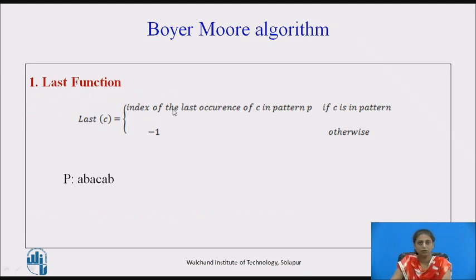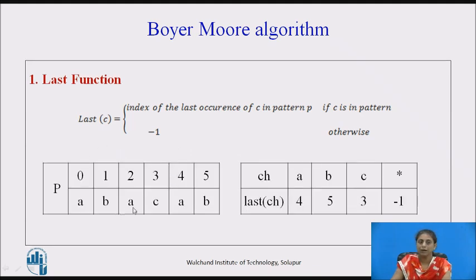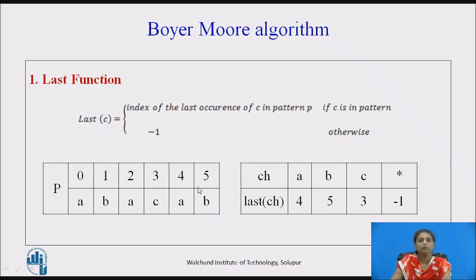The first step of the BM algorithm is to calculate the last occurrence of each character, called the last function. The last occurrence of character C in the pattern is the index of its last occurrence if C is present, or minus 1 if it is not present. For example, for pattern A, B, A, C, A, B: the last occurrence of A is 4, B is 5, and C is 3. Characters not present in the pattern get minus 1.